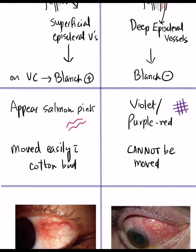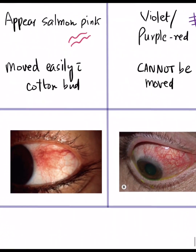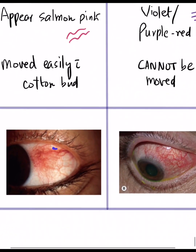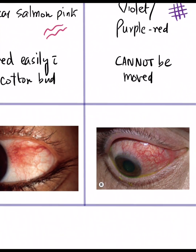Because of the superficial nature of the blood vessels in episcleritis, they can be moved easily with a cotton bud. On the other hand, in scleritis, the vessels cannot be moved. In this photograph, you can see the episcleral vessels in episcleritis, and on the contrary, the much deeper, bluish or violaceous hue of scleritis.